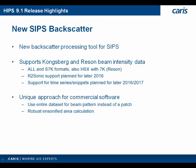The major new piece in the 9.1 release is the new Sips backscatter engine. This new tool is designed as a complement to our existing Sips geocoder implementation. At the moment, we support beam intensity data for most Kongsberg and Reson systems. We will be supporting both Sips backscatter and Sips geocoder going forward, so our users have a choice in what approach they want to take. The Sips backscatter takes a new approach to processing multibeam backscatter, specifically on how we handle the beam pattern.